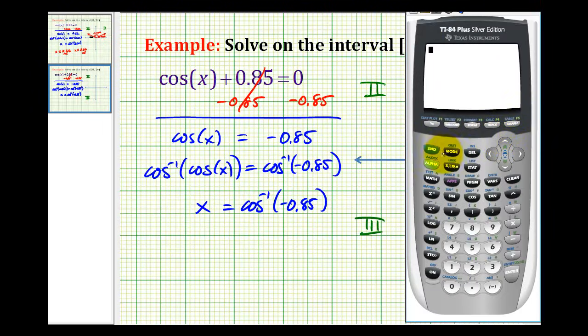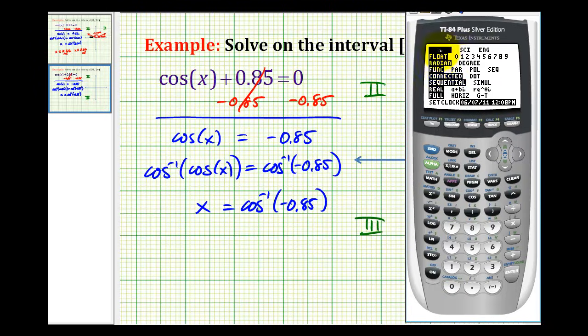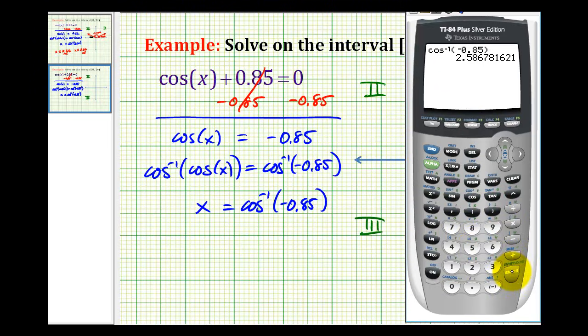Now we'll go to the calculator to help us determine one of the solutions to this equation. Let's start by making sure that we're in radian mode. You can see here in the third row we are. So now we'll press second cosine negative 0.85. And so one of the solutions on the given interval is when x is approximately 2.587 radians.